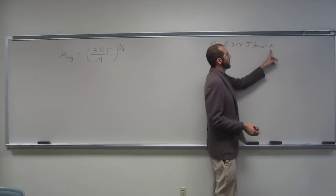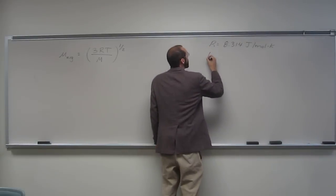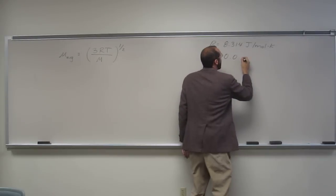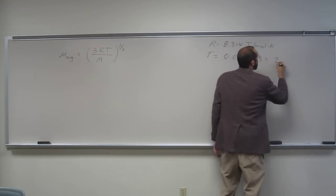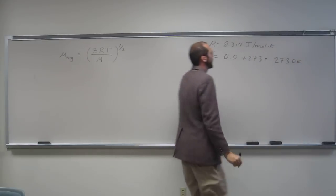Temperature, of course, since this is in kelvin, you've got to change your temperature to kelvin. So the temperature is 0.0 Celsius. We're going to add 273 to that to get 273.0 kelvin for our temperature.